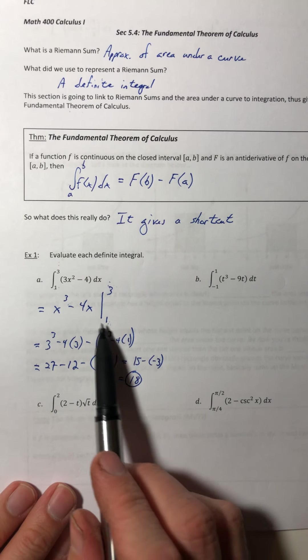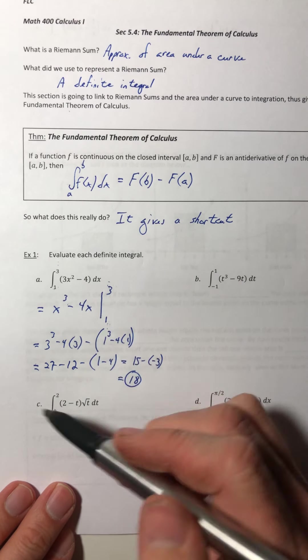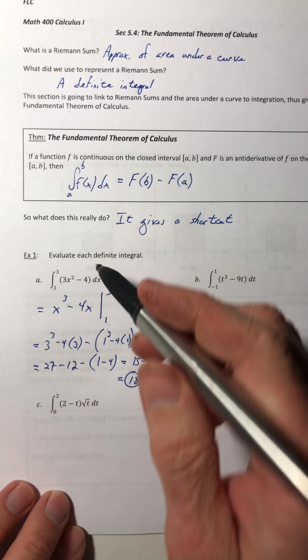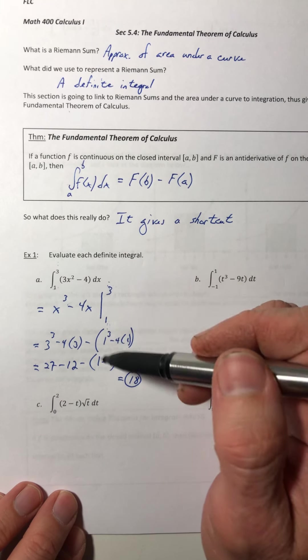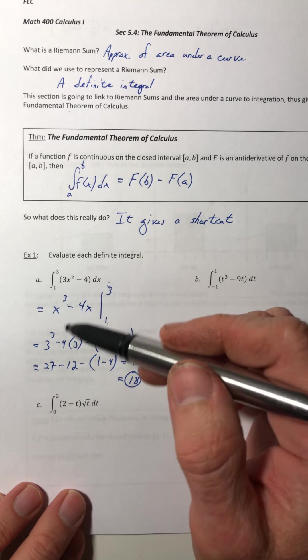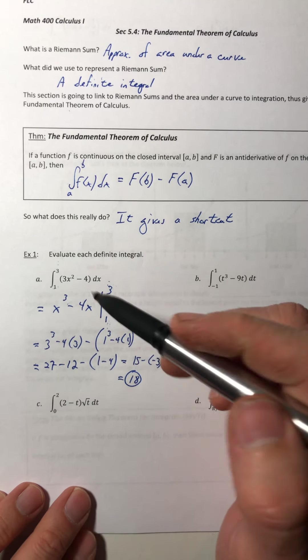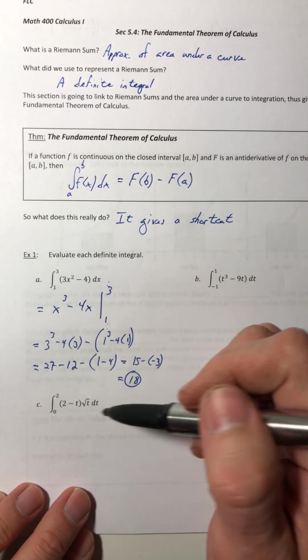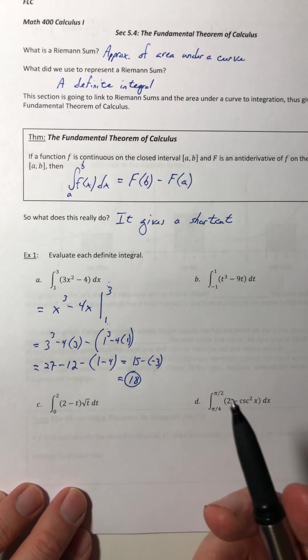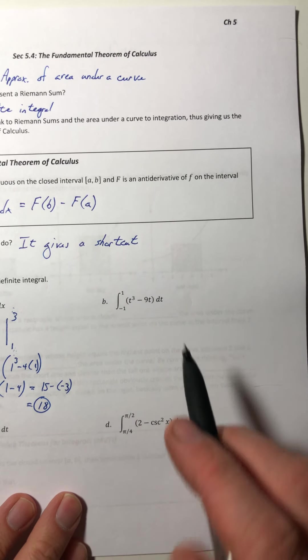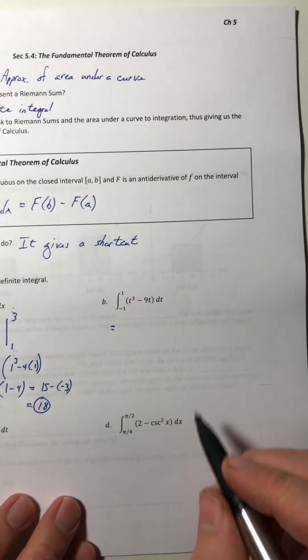So we have 15 minus a negative 3, which usually gives us 18. So this right here, that was way faster than drawing out the curve, putting in your rectangles, doing the sum, getting the delta x and whatnot, plugging it in, getting the formula for the sum, evaluating that, and then finally taking the limit as it goes off to infinity. That took several minutes. Well, now we just have one that took like one minute. So we like this a lot better.